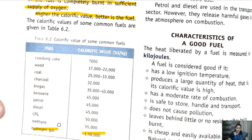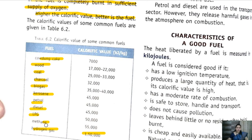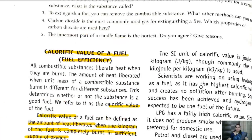We are currently using methane, LPG, diesel, petrol, kerosene, biogas, charcoal, coal, wood, and cow dung cake as fuels, each having a respective calorific value. LPG has a calorific value of about 50,000 kJ/kg and is a good fuel. The SI unit of calorific value is joule per kilogram (J/kg), though commonly kilojoule per kilogram (kJ/kg) is used. Energy in 1 kg: how much energy is liberated — that is joule per kg.